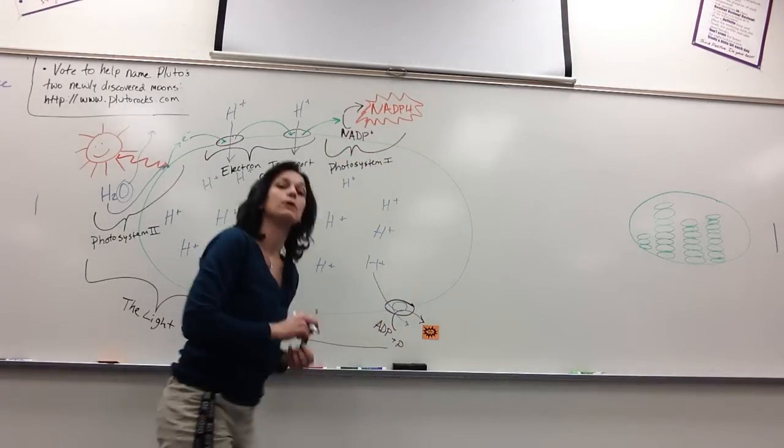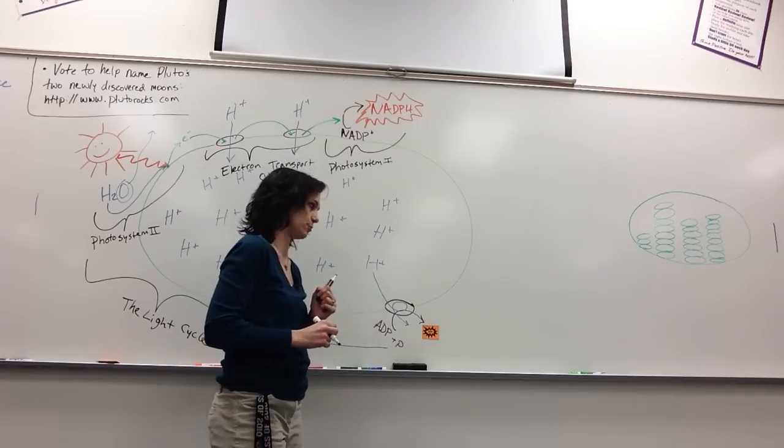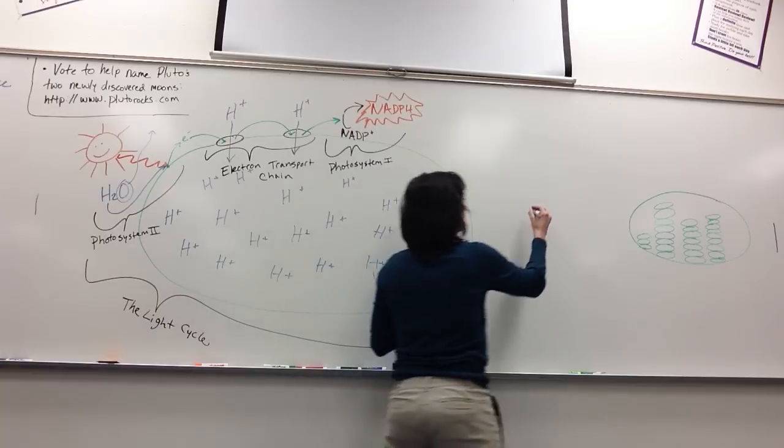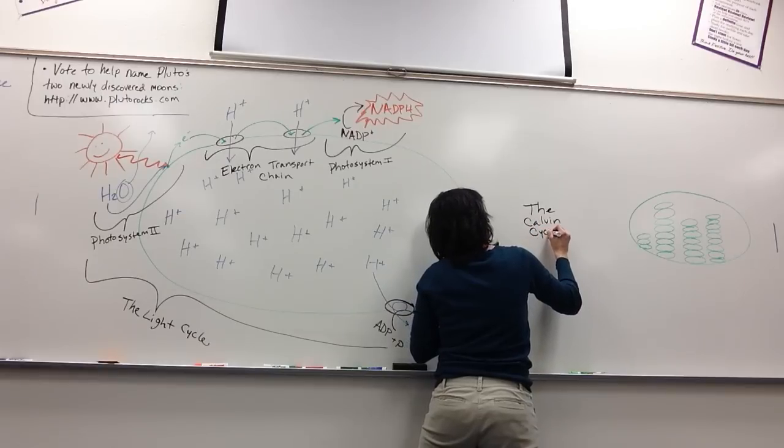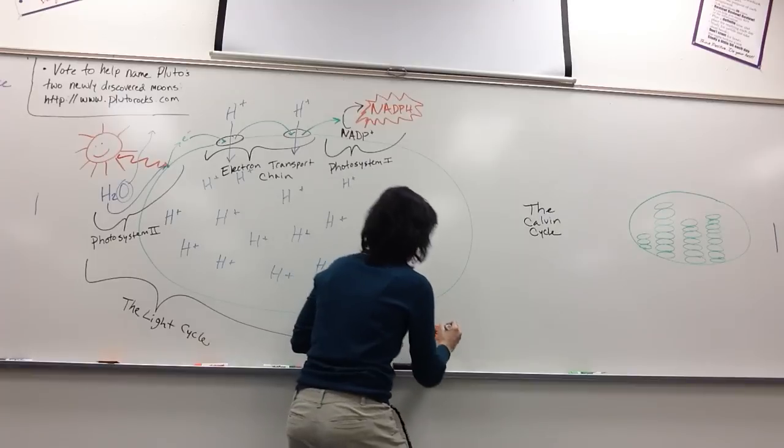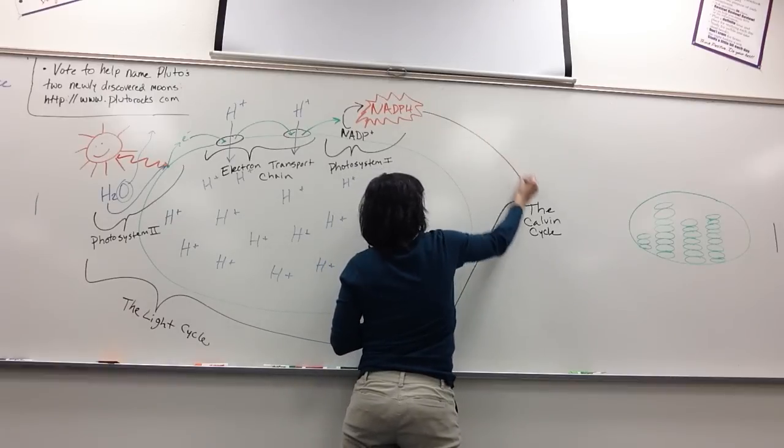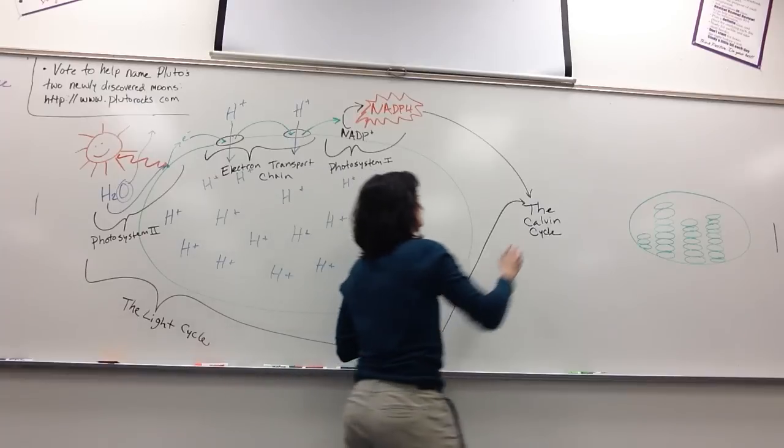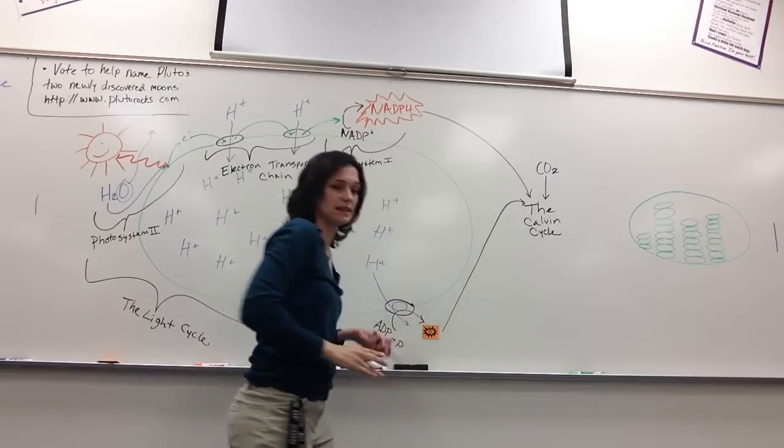Now, you've probably remembered from when we were talking before that photosynthesis produces sugars. And, we have not gotten to the sugar production yet. The sugar production happens in the second part of photosynthesis. And, this is what we call the Calvin cycle. And, so, in the Calvin cycle, you're going to bring in three ingredients. We're going to bring in the ATP that got produced in the light cycle. We're going to bring in the NADPH that got produced in the Calvin cycle. And, we are going to bring in some carbon dioxide from the atmosphere. So, all three of these are going into the Calvin cycle.